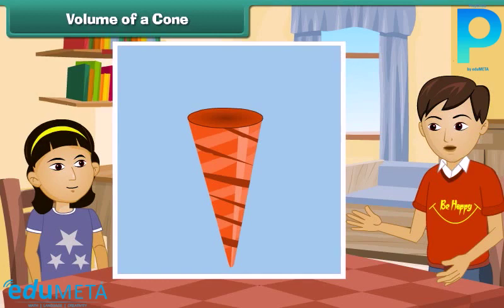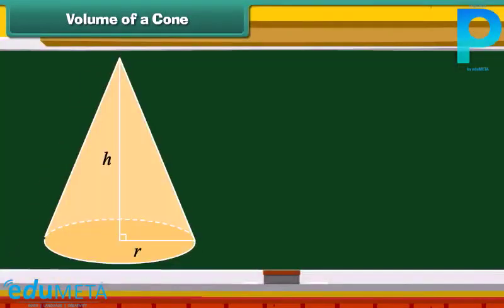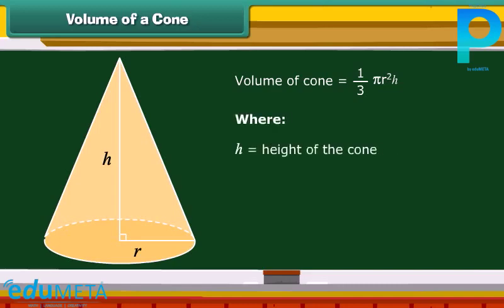The volume of a cone is equal to 1/3 πr²h, where h is the height of the cone and r is the radius of the circular base of the cone.